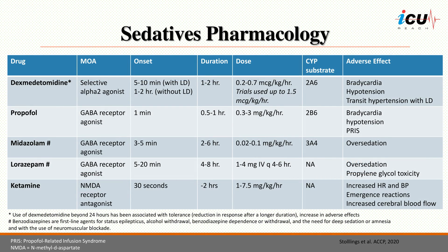In summary, the main sedatives used in the ICU are dexmedetomidine, propofol, and benzodiazepines. Each has its own pharmacological characteristics that make it a good option for certain patients. Dexmedetomidine can be used for mechanically ventilated and non-intubated patients and is a good option for light sedation and analgesic effect. Propofol can provide light or deep sedation, suitable for patients with increased intracranial pressure or post-cardiac arrest. We prefer to avoid benzodiazepines in general, but they may be appropriate in patients with status epilepticus, alcohol withdrawal, benzodiazepine dependence or withdrawal, and with the use of neuromuscular blockade. Thank you.